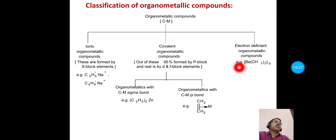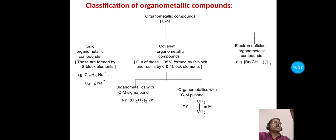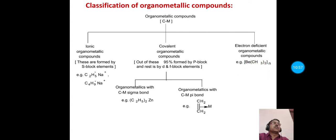The third category is electron-deficient organometallic compounds. These compounds cannot be described on the basis of a two-centre, two-electron formula. They may be formed by three-centre, two-electron bonds. An example is (BeC2H5)₂ taken n times.